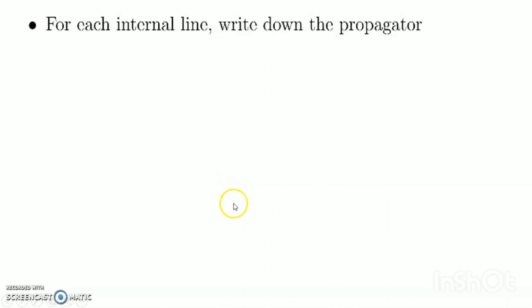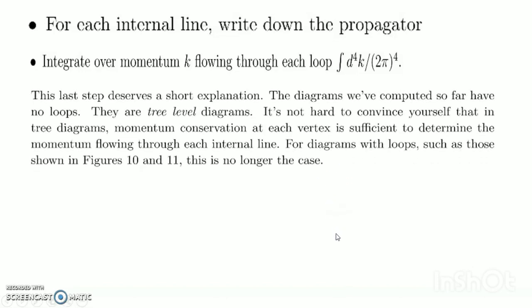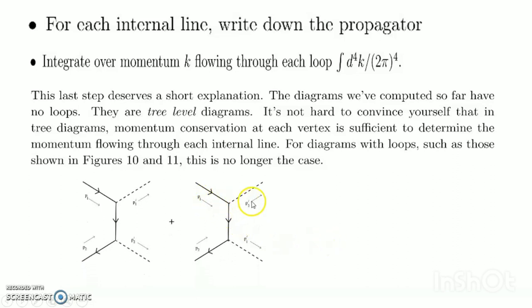This last step deserves a short explanation. The diagrams computed so far have no loops — they are tree-level diagrams. In tree diagrams, momentum conservation at each vertex is sufficient to determine the momentum flowing through each internal line. For diagrams with loops, this is no longer the case. To summarize: use the propagator for each internal line, write down a factor of ig at each vertex, and integrate over momentum k as d⁴k/(2π)⁴.